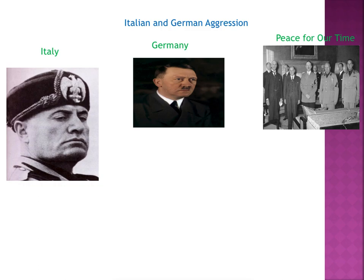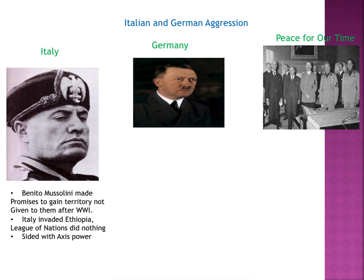Moving to the western side in Europe, we see Italian and German aggression. Italy, with Benito Mussolini, made promises to gain territory not given to them after World War I. Mussolini was very upset that after World War I they did not earn any territories in the treaties that ended the war, so he took it upon himself to invade Ethiopia. The League of Nations did nothing about this — they had no political power.